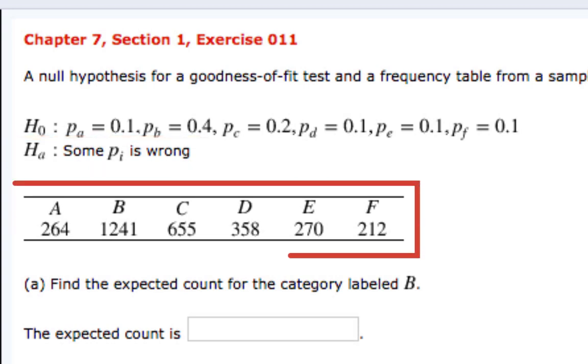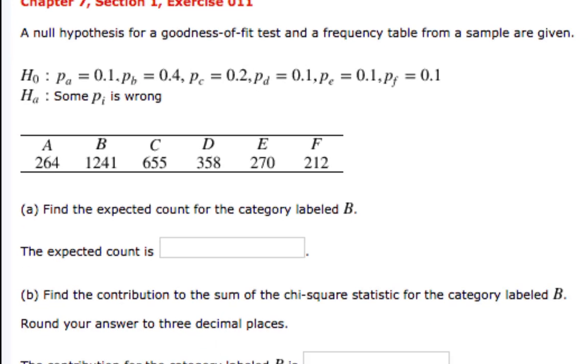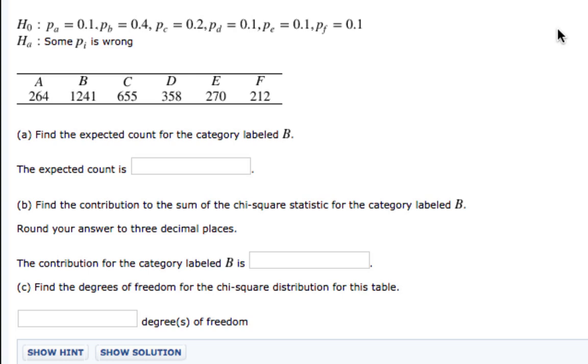In our table, we have our observed counts. Parts A, B, and C here we're going to do using Minitab Express.